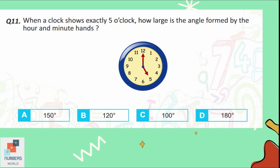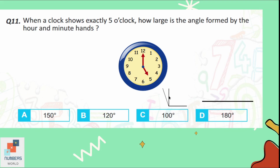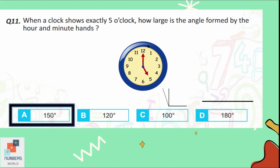Question number 11: when a clock shows exactly 5 o'clock, how large is the angle formed by the hour and minute hands? 180 degrees forms a straight line, so option D is not correct. Option C is 100 degrees and option B is 120 degrees — neither matches the clock. Option A, 150 degrees, is the correct estimation of the angle formed by the hour and minute hands as shown on the clock.